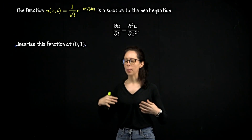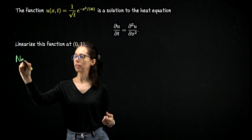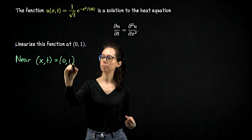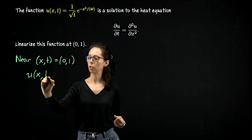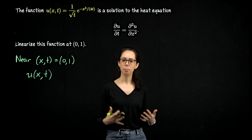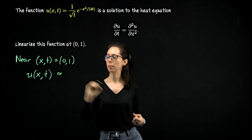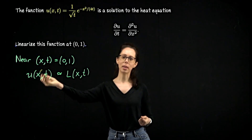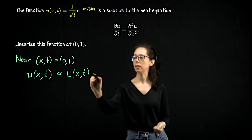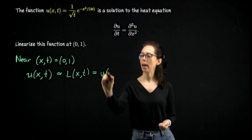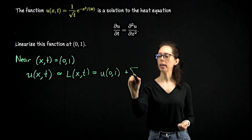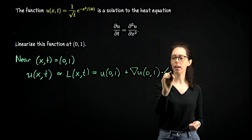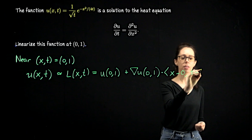The goal is to say that if we are near the point (x, t) = (0, 1), the function u of x and t is approximated by its first-order linear approximation L of x and t. This is computed as u at that point, plus the gradient of u at that point, dot the vector (x minus 0, t minus 1).